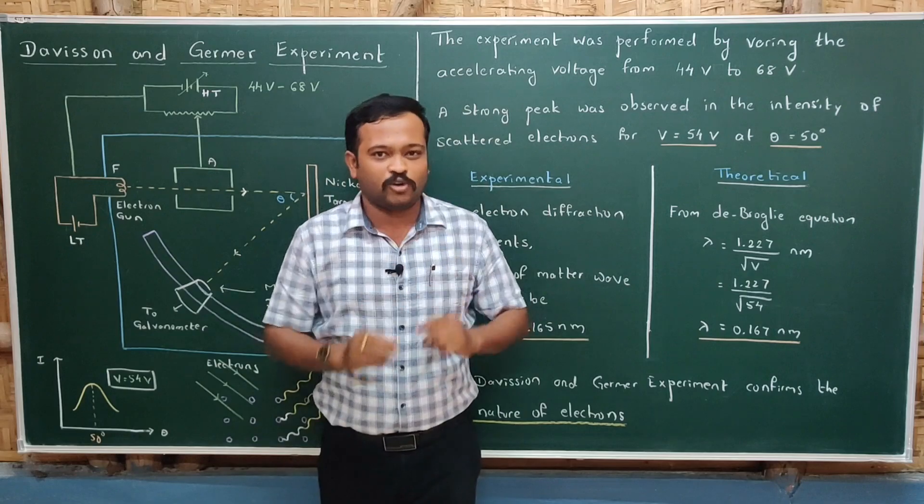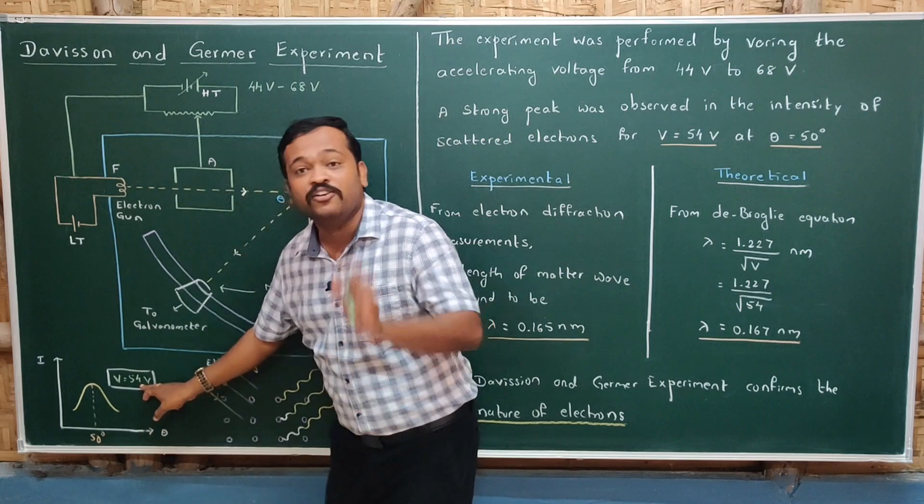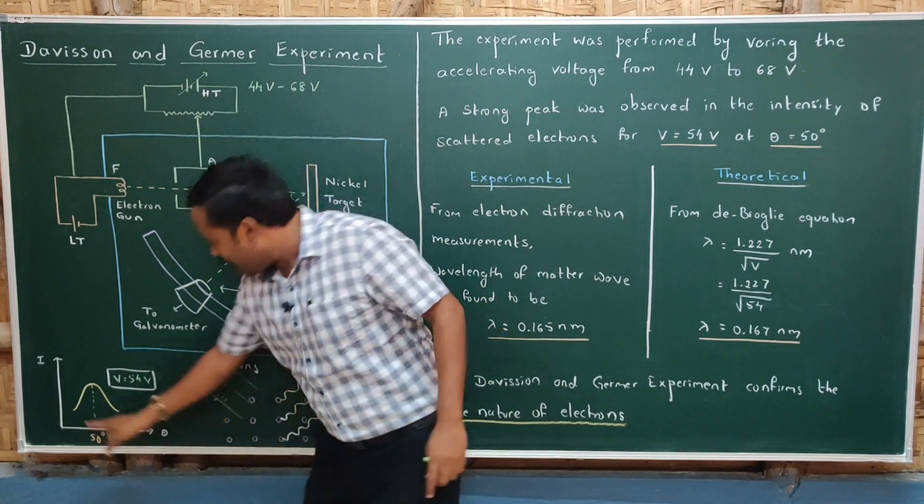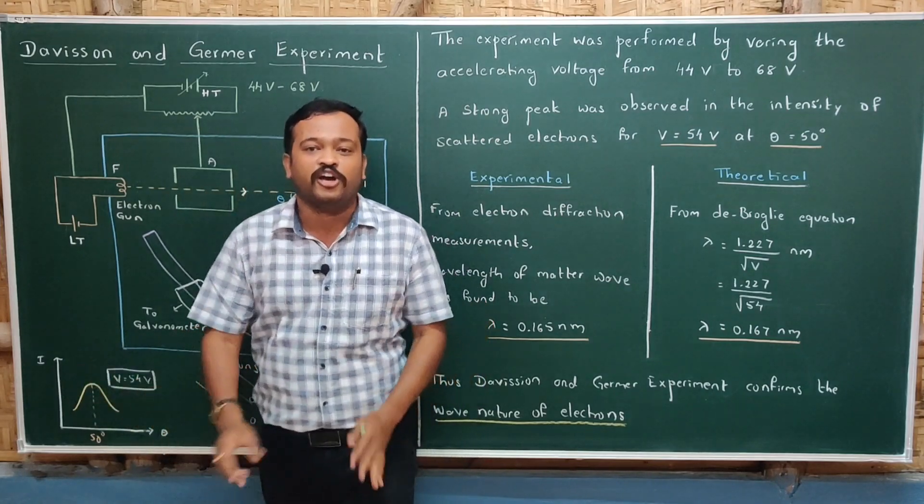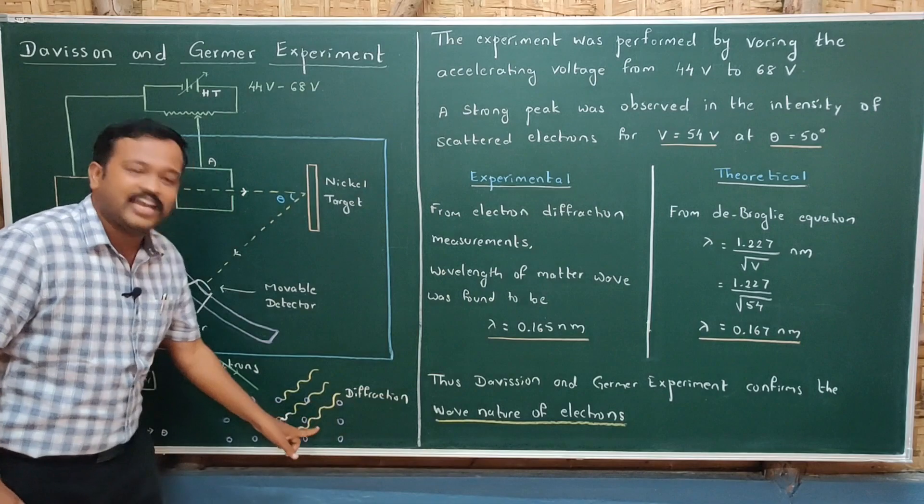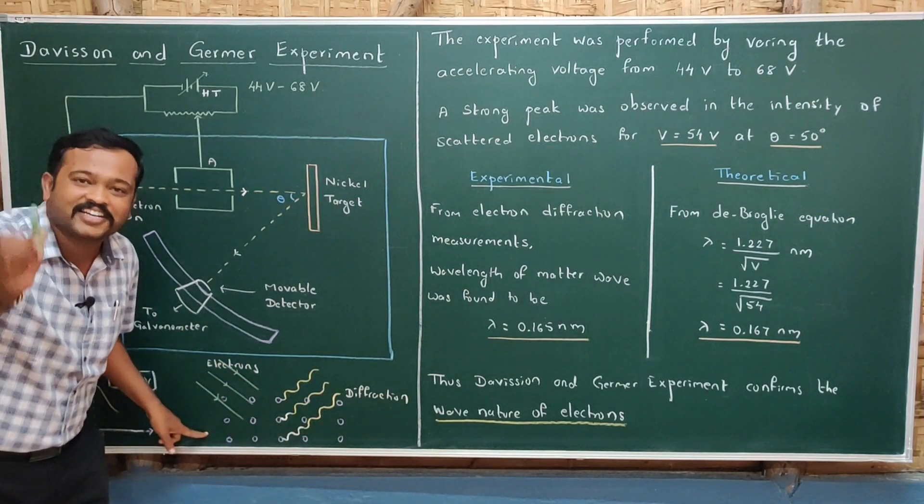A strong peak was observed in the intensity of scattered electrons at accelerating voltage 54 volts and scattering angle 50 degrees. And this peak was observed due to constructive interference of scattered electrons from the different layers of atoms of nickel crystal.